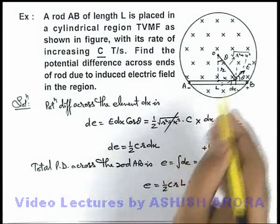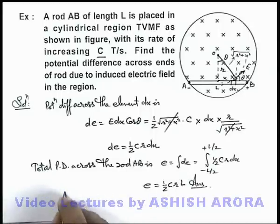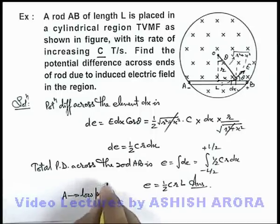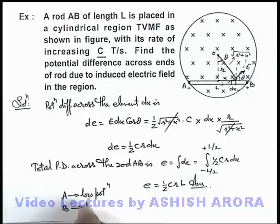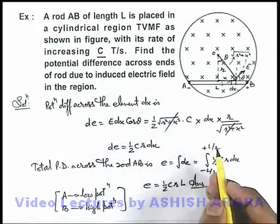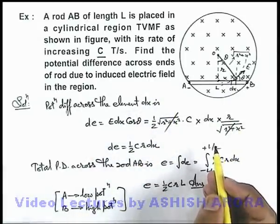So we can directly state in this situation, point A will be the low potential end and point B will be the high potential end. In this situation, you must be very careful about the polarity of the potential difference induced across point A and B.